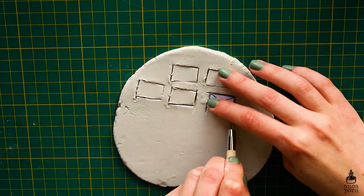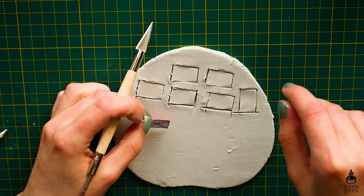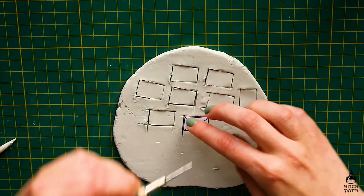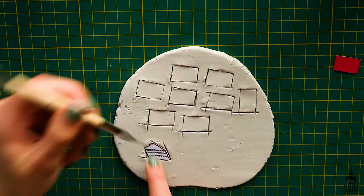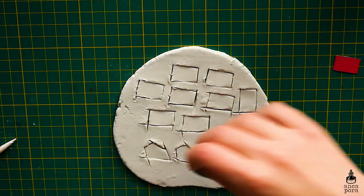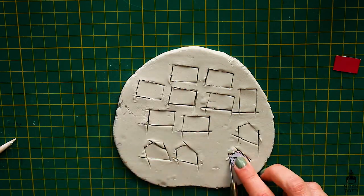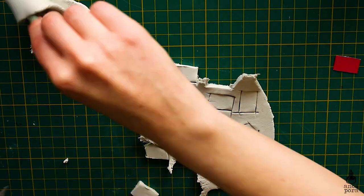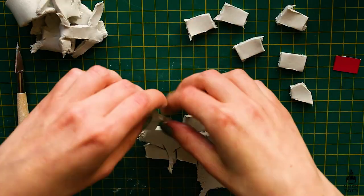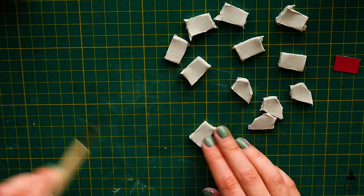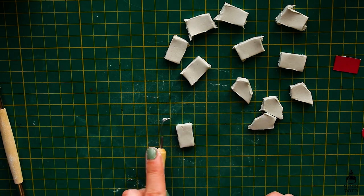This particular time I used Das air dry clay, but usually I like to use the Darvi one. I think it's better and easier to work with. I made some stencils using cardboard and cut out the shapes of the earrings.